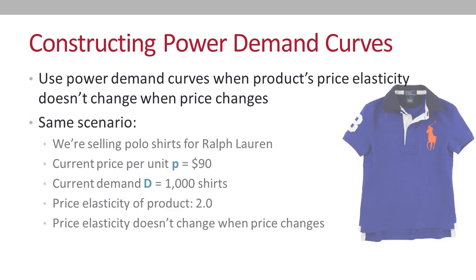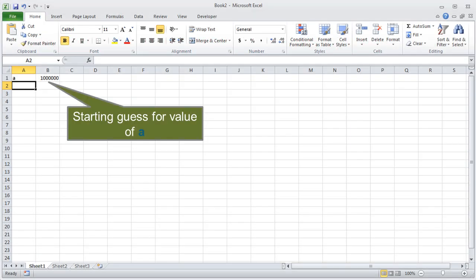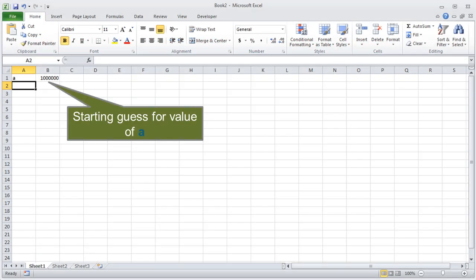Let's use our same sample situation — we're working for Ralph Lauren, demand is 1,000 units at $90, but this time elasticity stays at 2 regardless of price. We can use Excel's Goal Seek functionality to calculate the value of A in our power demand curve equation. We don't know what A's value will be, so we enter 1,000,000 as a starting guess, enter our current unit price of $90, and set the demand cell to the power demand curve formula.